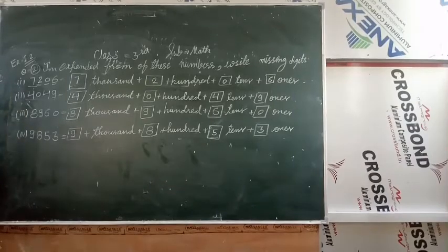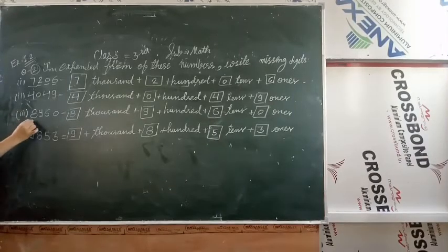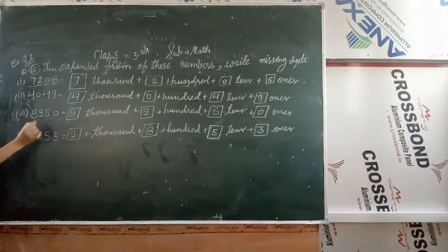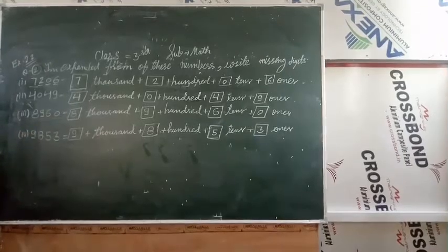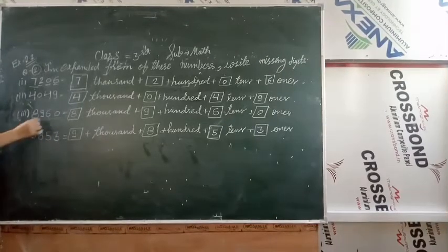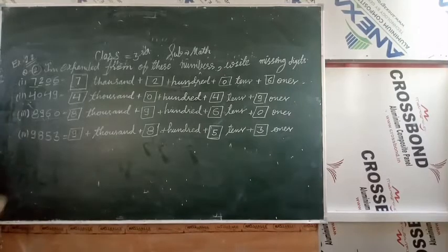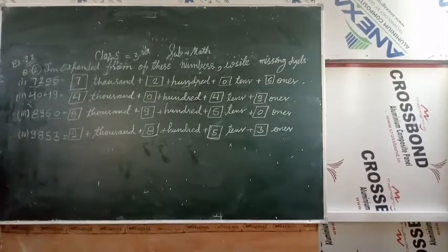Question number 3. 8960. This is 4 digit number. Ones is 0. Tens is 6. Hundreds is 9. And thousands is 8.